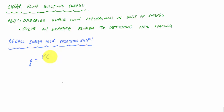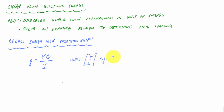The first moment of area Q is probably the most difficult thing to calculate — it's associated with the location on the cross section where you want to compute shear flow. I is the area moment of inertia for the entire cross section. The units of shear flow q are force per length, such as newtons per millimeter or pounds per inch.